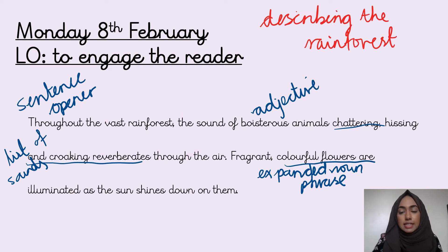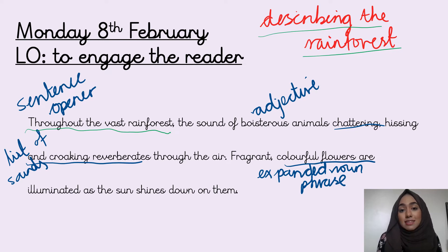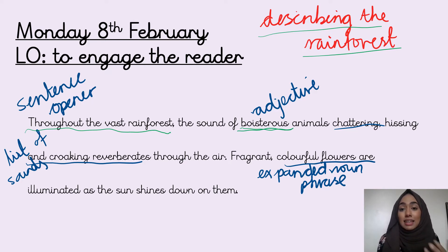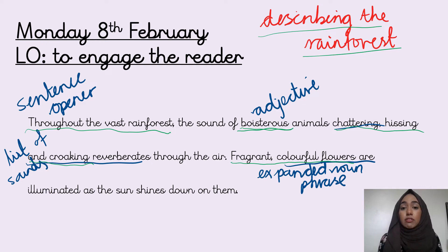So we're looking at the first two sentences and thinking about why they work. The first two sentences describe the rainforest — what you can see and what you can hear. It starts off with a sentence opener; we use these to engage the reader and hold their attention because all the sentences sound different and aren't repetitive. You have these in your booklet so make sure you use them. Then we have adjectives — boisterous gives more information than noisy or loud; it tells us the animals are noisy but also very lively. Then chattering, hissing, and croaking lists the sounds using commas. This sentence starts with an expanded noun phrase — we use these to give even more detail to the reader, so you can imagine they smell nice and are colourful.